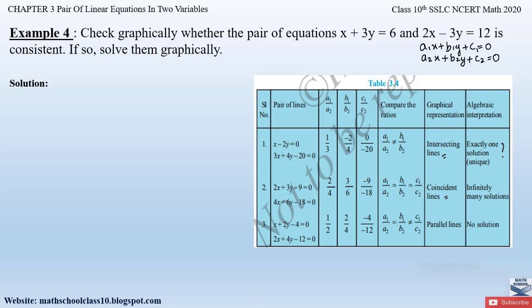These are the two categories when equations are consistent: intersecting lines and coincident lines. If the lines are not consistent, they are parallel; in that case a₁/a₂ = b₁/b₂ but that does not equal c₁/c₂. So let us check these three conditions to find out whether the lines are intersecting, coincident, or parallel.